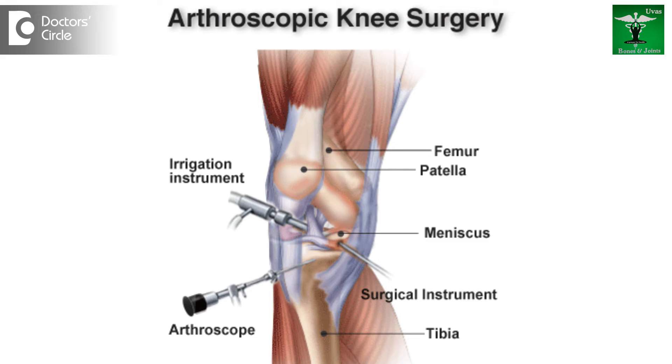If the disease is Grade 3 or beyond, we plan for arthroscopic procedures wherein we do chondrocyte implantations with stem cell therapy, or we do a notchplasty, a chondroplasty, burr holes — whatever is appropriate depending on the stage of disease. This is limited to Grade 2 and Grade 3 diseases.